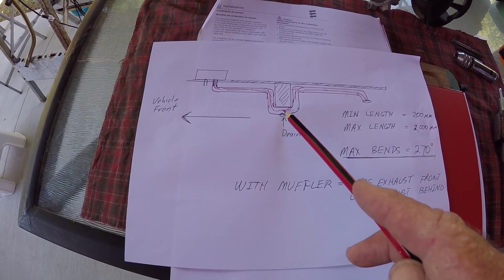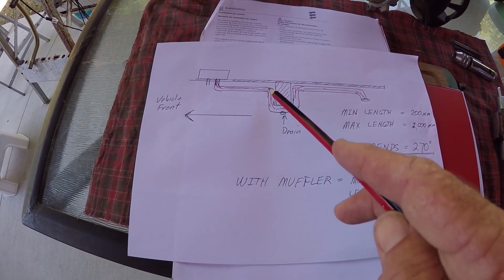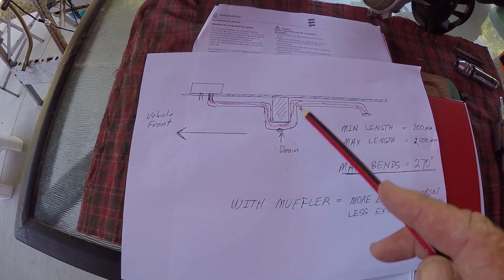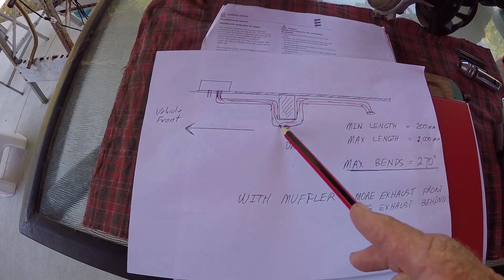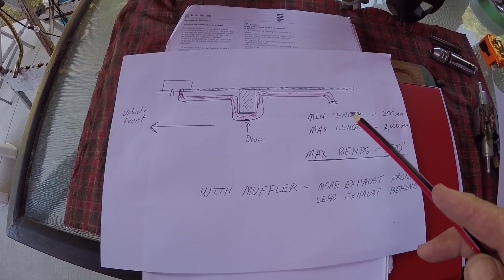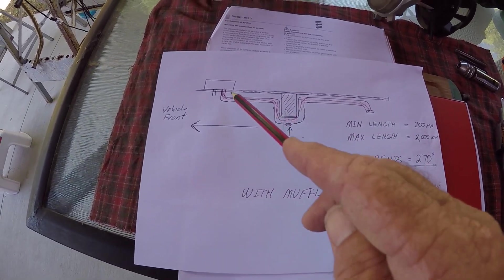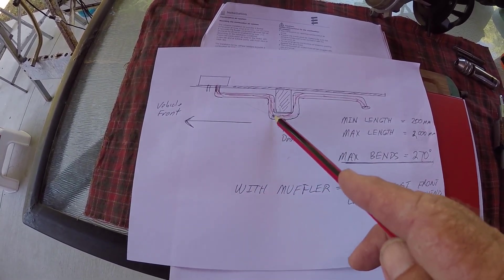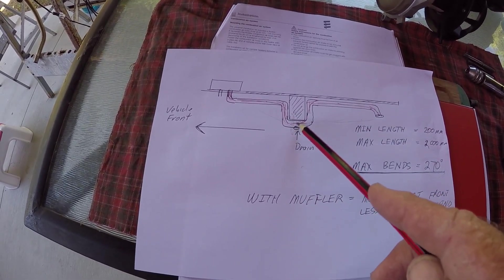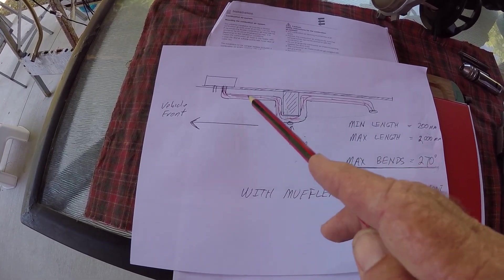Well two things here. First you must put a drain hole in the lower spot here to allow the condensation and moisture or unburned diesel to escape. And second you're putting a lot of restrictions in here. So there's 90, 90, 90, so there's your 270 here, then you've got another 90, 90, 90, 90. So try and have the less restrictions you can.